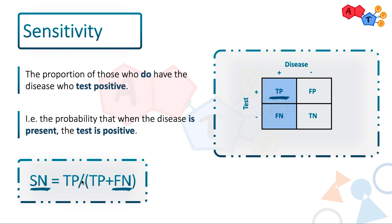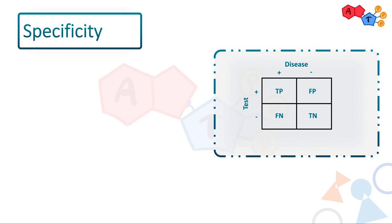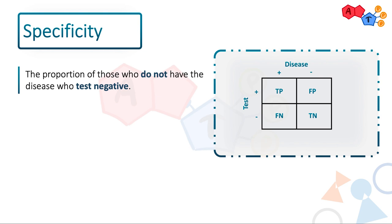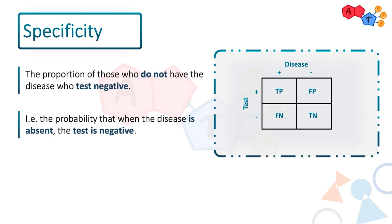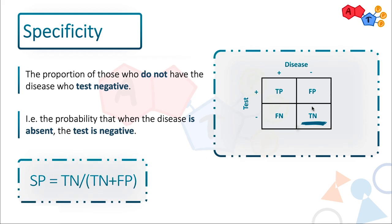Before we talk further about how sensitivity can rule out disease, let's quickly contrast it with specificity, which is its exact opposite. Specificity's definition is the proportion of those who do not have the disease who test negative — the probability that when the disease is absent, the test is negative. So those who do not have the disease are your true negatives and false positives, and we're only interested in those who test negative — the true negatives. The formula is true negative over true negative plus false positive. The mnemonic: specificity — you hear that 'P'? Just remember false positive, and flip the other two terms: true negative over true negative.